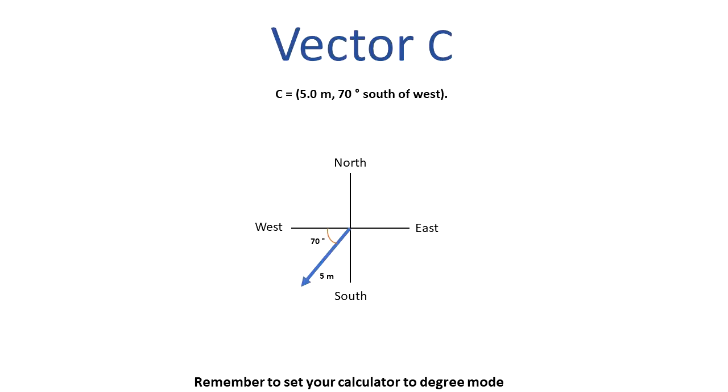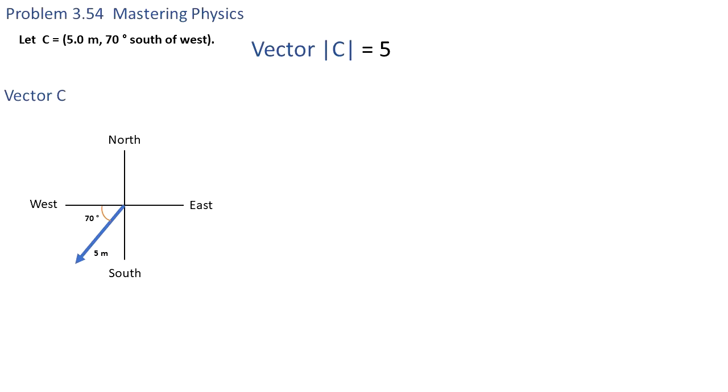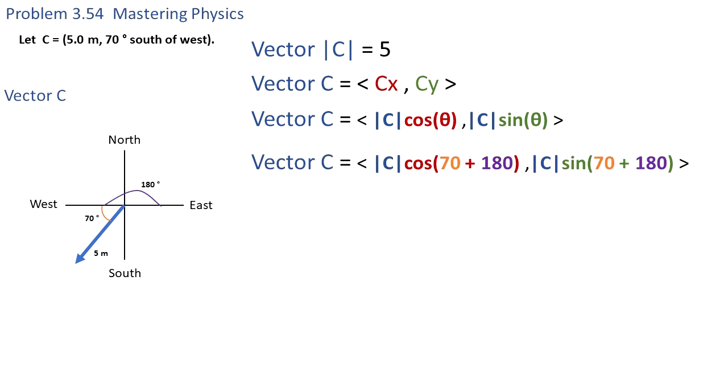Now let's analyze vector C. Vector C has a magnitude of 5 meters and is 70 degrees south of west. We go to the west and swing 70 degrees to the south, which gives us this vector in the third quadrant. We have to pay close attention because 70 degrees is between the negative x-axis and the negative y-axis.